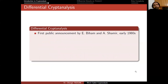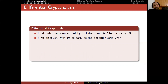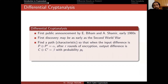Differential cryptanalysis is different because it is a chosen plaintext attack. It was first publicly announced by Eli Biham and Adi Shamir in the late 1980s, though this may have been known as early as the Second World War, or even before — we don't know.